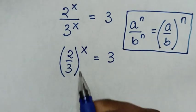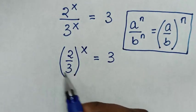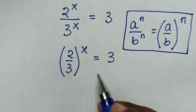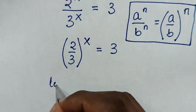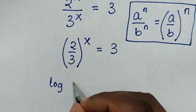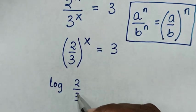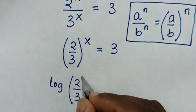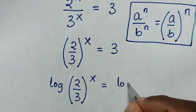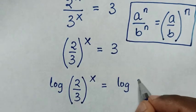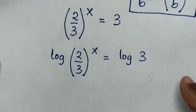Then in the next step, to move this power to the base, we'll apply log on both sides. So it will be log of 2 over 3, bracket to the power of x, is equal to log of 3.